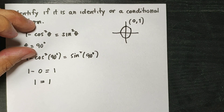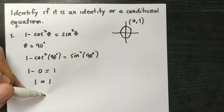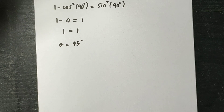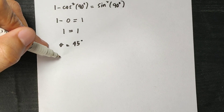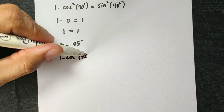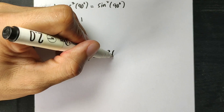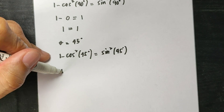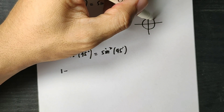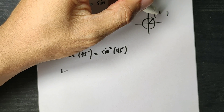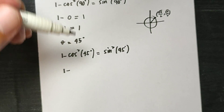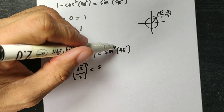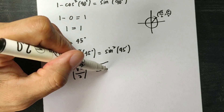Let us check when theta is 45 degrees. We will get 1 minus cosine squared of 45 degrees equals sine squared of 45 degrees. The coordinates of 45 degrees on the unit circle are square root of 2 over 2 and square root of 2 over 2. So cosine is square root of 2 over 2, then squared, equals sine of 45 which is also square root of 2 over 2, then squared.